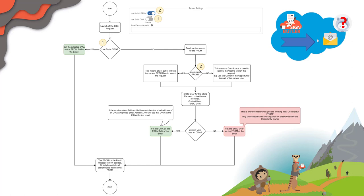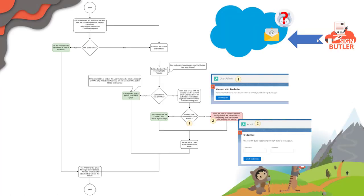Next up is what happens when automated mails have to be sent. For example, I'm on the signing page, I sign the document, and now the next signer has to be notified, or a download mail needs to be received. How do we decide who's going to be the sender in that case? Salesforce does not allow you to just use any from-user in the email — it has to be controlled in the way Salesforce allows.